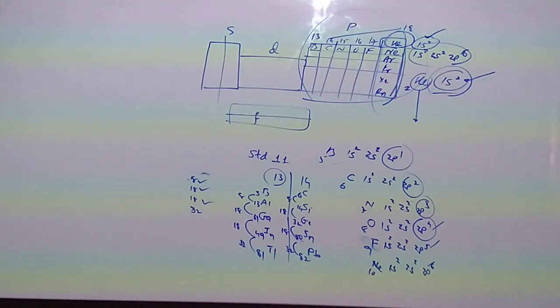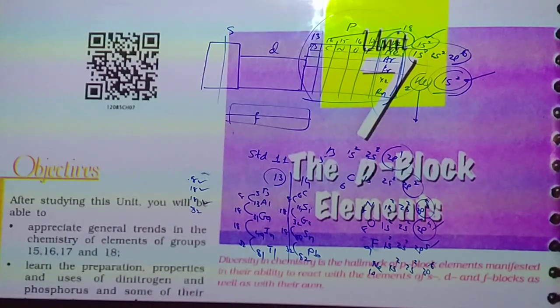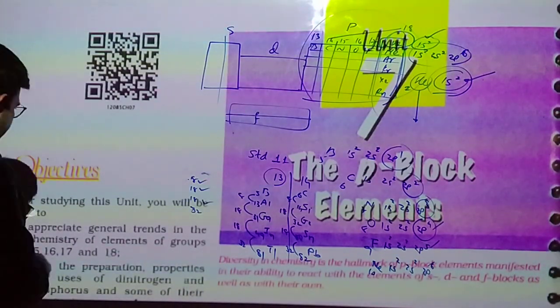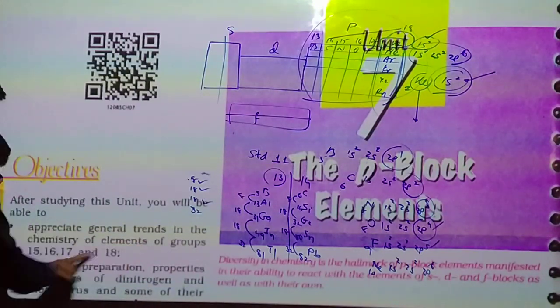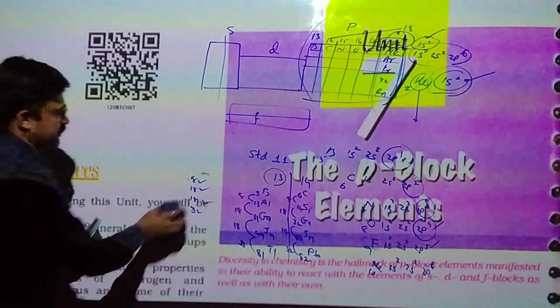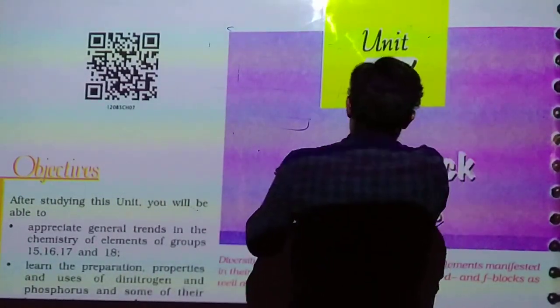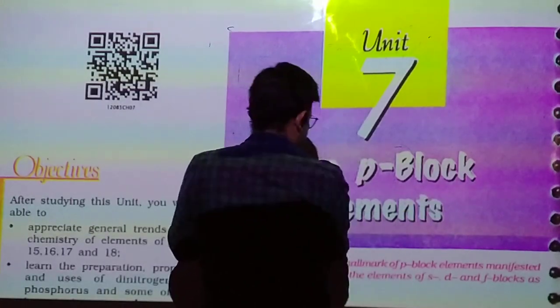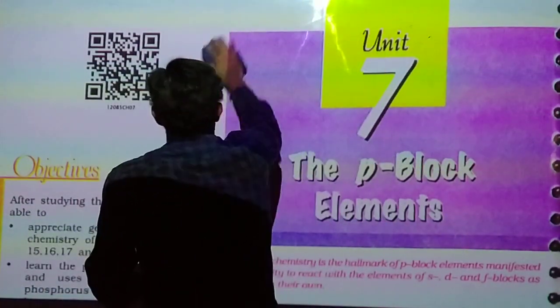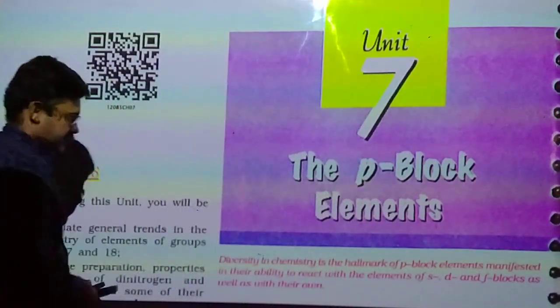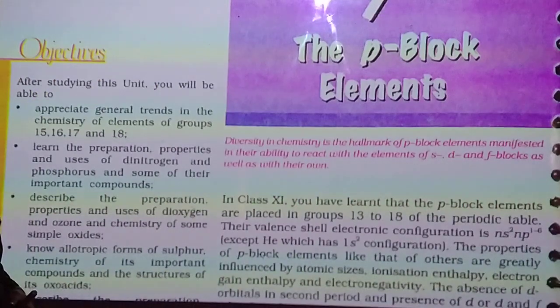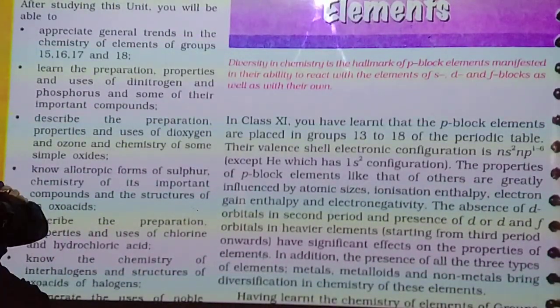Out of 6, groups 13 and 14 are not in our syllabus of 12th standard, which is in Standard 11 we discussed. So here we are going to discuss about group number 15. We will start this chapter. This p-block element chapter we are dividing into 4 parts: group number 15, 16, 17, and 18.